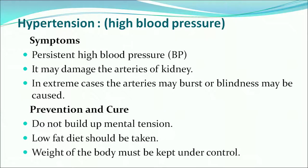The next condition is hypertension — high blood pressure. Symptoms include persistent high blood pressure, which may damage the arteries of the kidney; in extreme cases, arteries may burst or blindness may be caused. Prevention includes living in a non-stressful environment, concentrating on meditation, keeping calm and peaceful, taking a low-fat diet, avoiding oily and cholesterol-rich food, and keeping body weight under control.